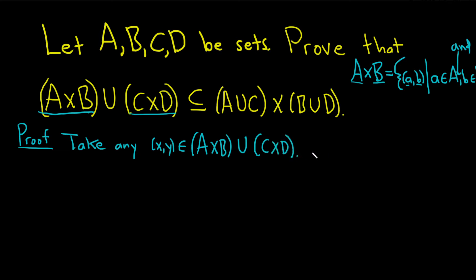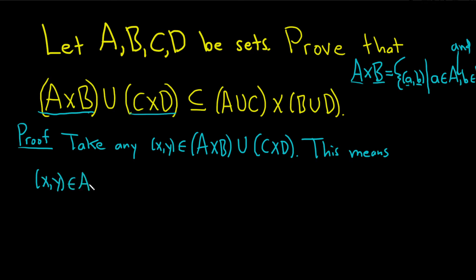So now we're going to write down what this means. What does it mean to be in the union? Well, it means that (x, y) is in this set, or — remember union means or — (x, y) is in this set. So this means that our ordered pair (x, y) is in A cross B, or our ordered pair (x, y) is in C cross D.